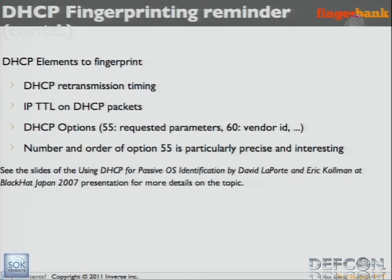So what is possible to fingerprint on DHCP? You could focus on retransmission timing, or the IP TTL on the packets. But what we've been using for PacketFence is option 55, which is the parameters list. DHCP is a key-value thing: you request a list of options and the server sends you the values. Option 55 is really interesting because it covers hostname, domain name, and a lot of options that we use or even don't use but are still there.